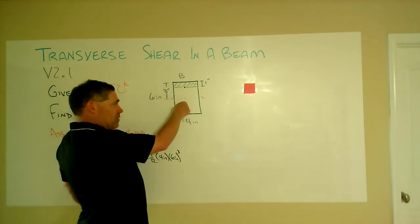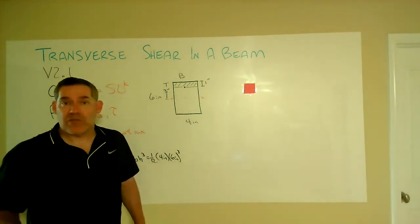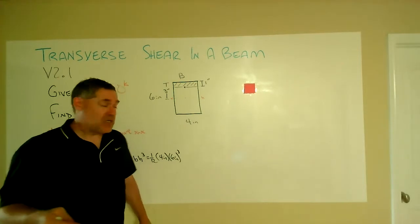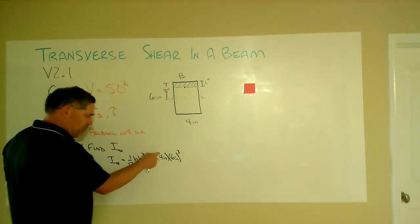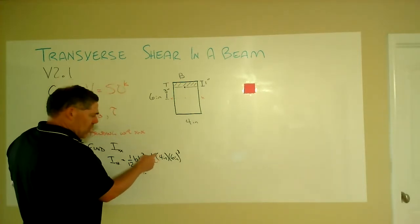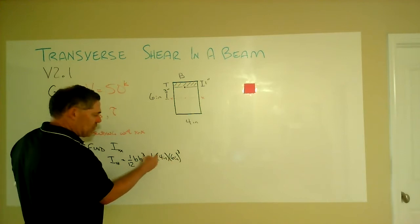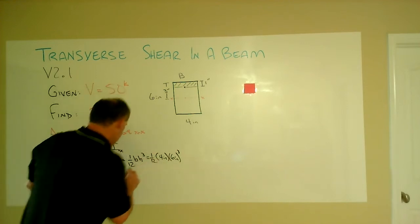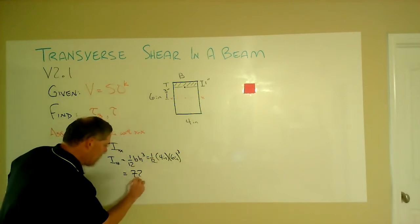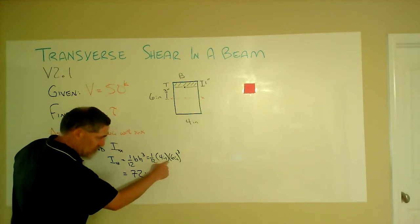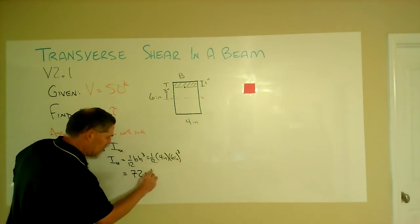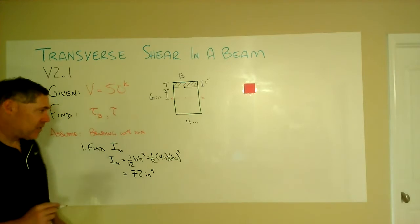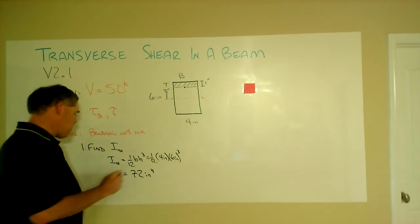Its centroid, of course, is right at the overall centroid. So there's no plus Ad squared term to deal with. And so four times six is 24, 24 divided by 12 is two, two times 36, the six squared that's left over would be 72. So we have 72 inches to the fourth is the value of our I.